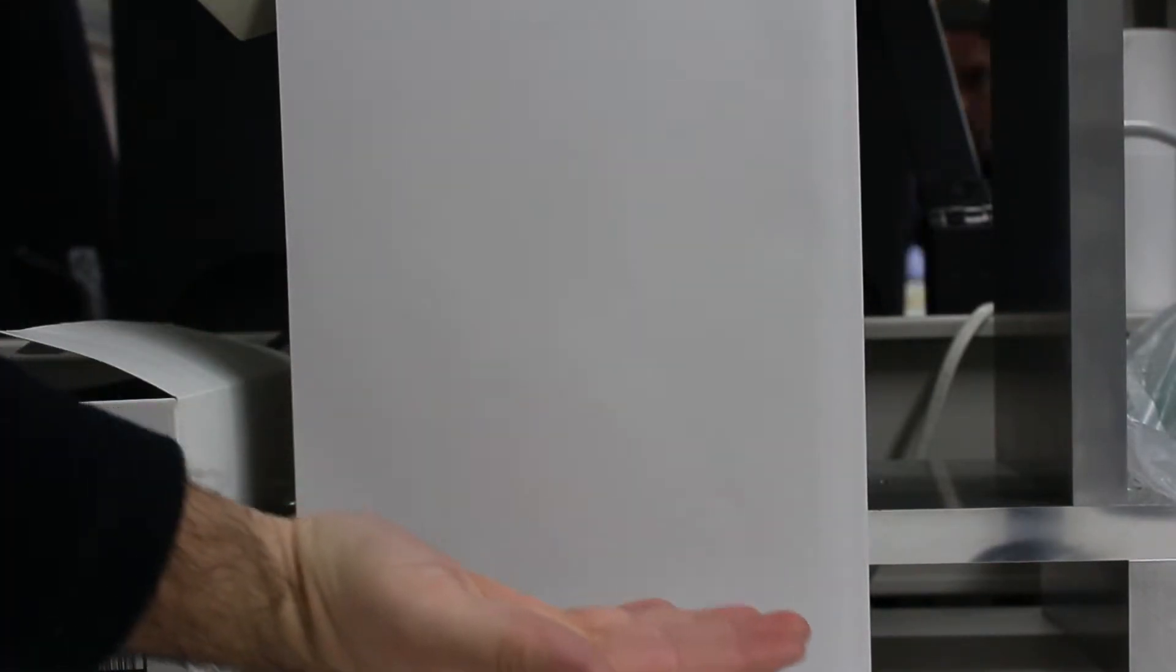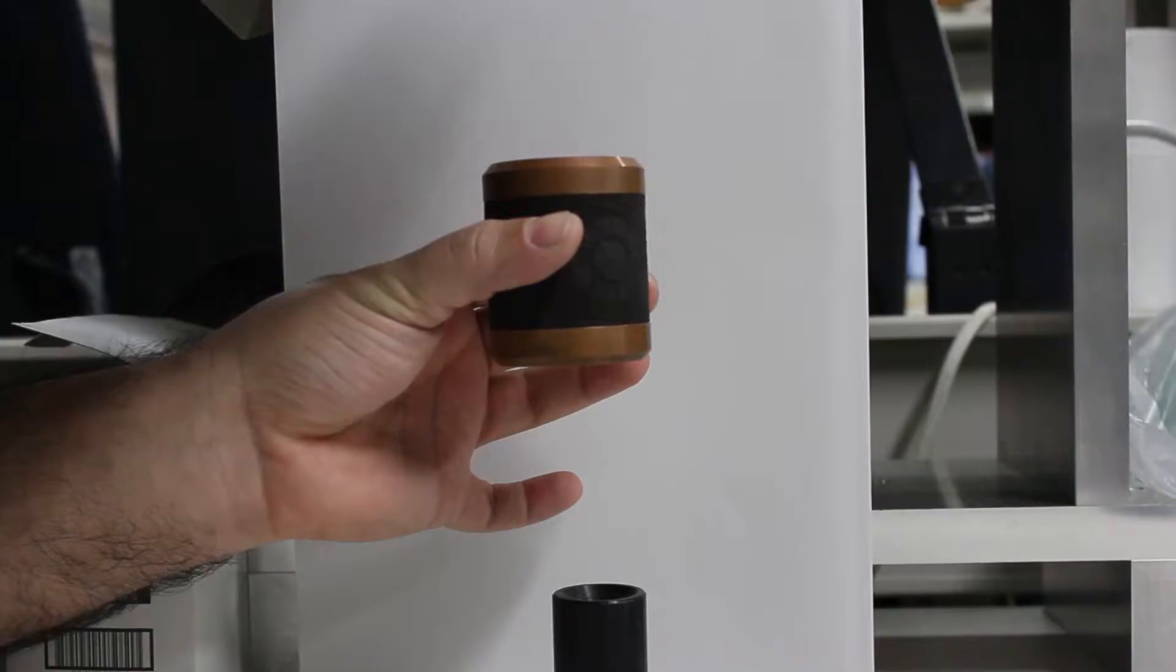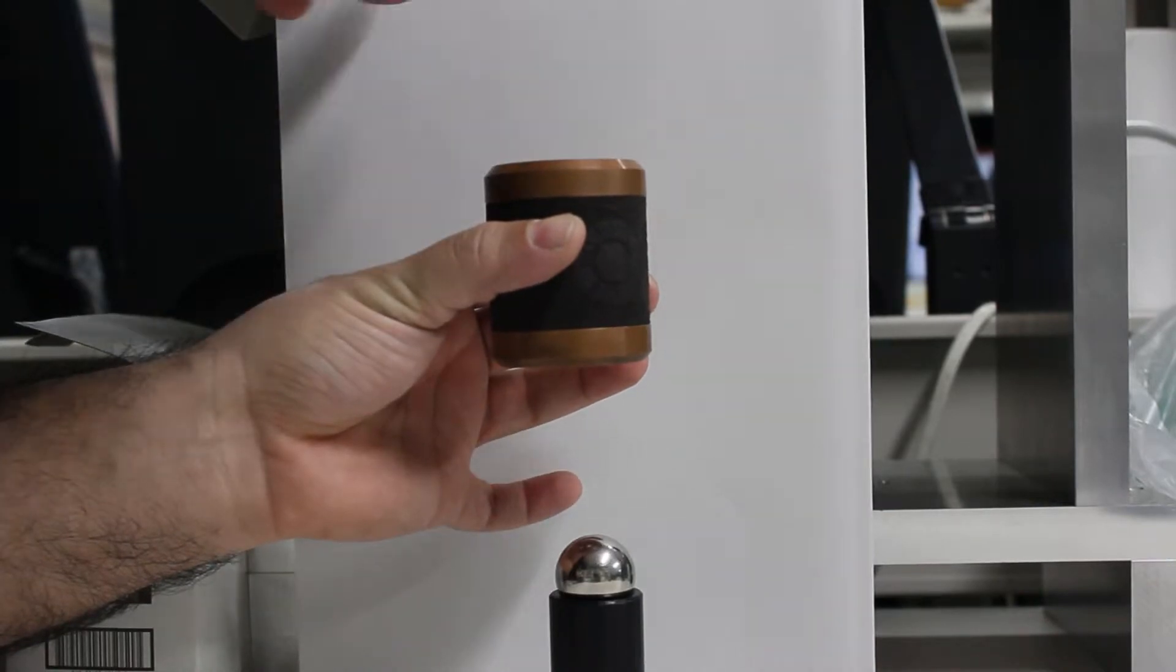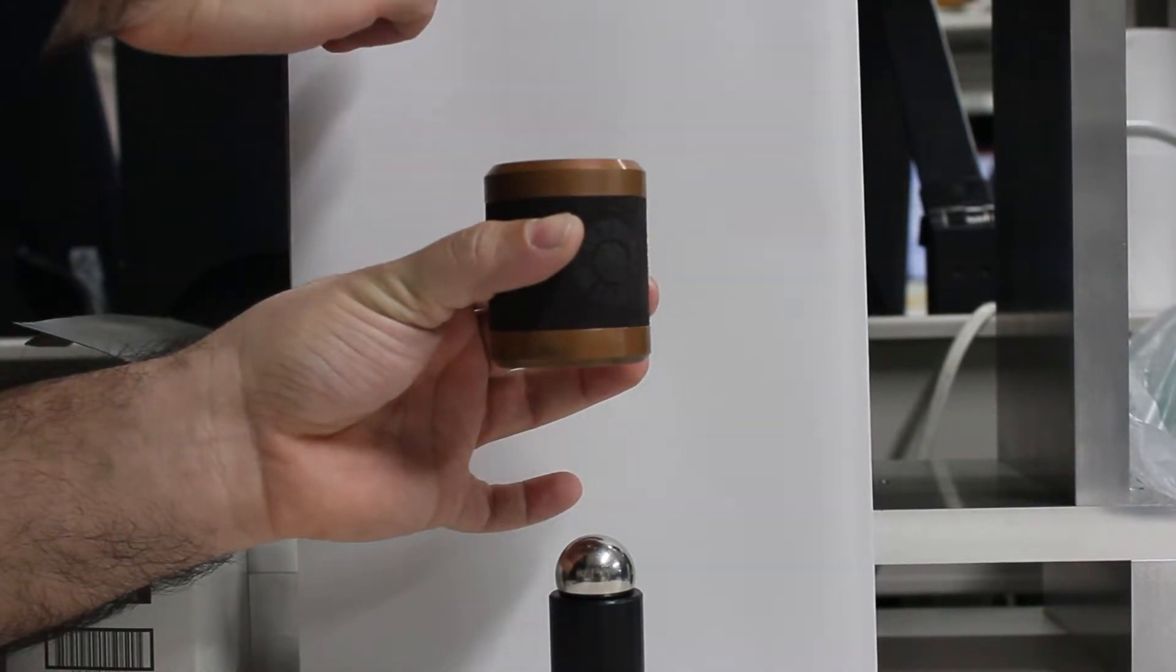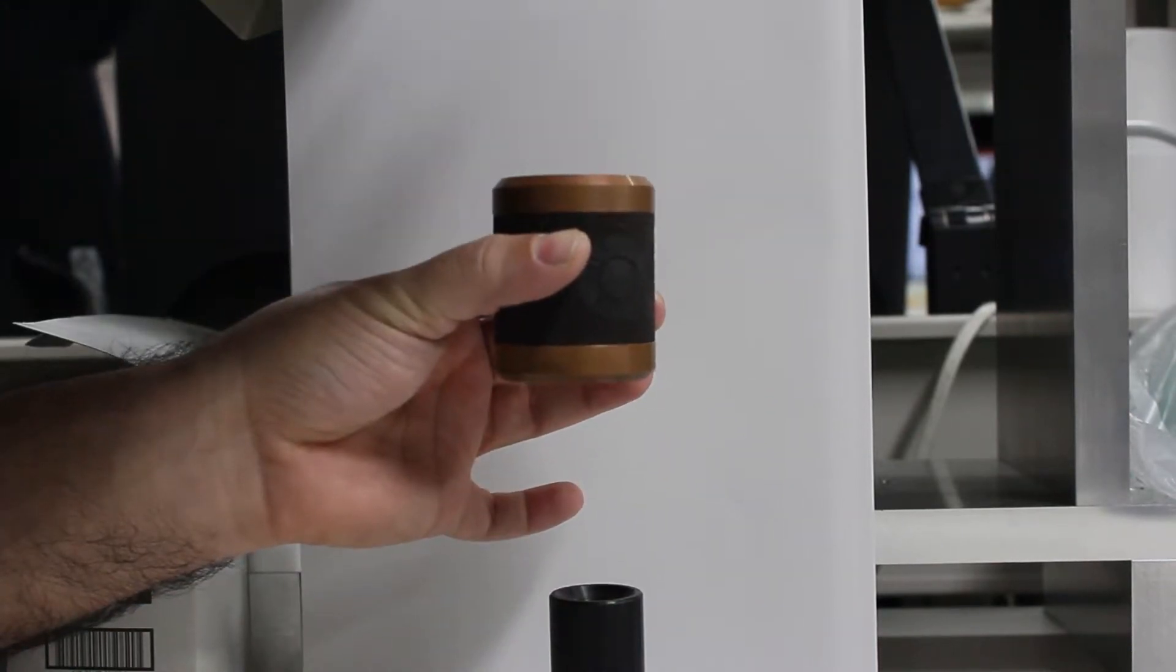Naturally, if we drop this permanent magnet, it will fall freely. But for some reason, when you drop it inside this copper cylinder, the fall is considerably slower. Why does it happen? Let's find out.